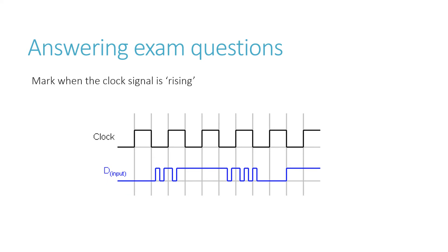The first thing you have to do is mark the points when the clock signal is rising. Those are the only points in the diagram that you are interested in. There may be fewer than this when you do the question in the exam. But that's the only places that you're interested in, where the signal is rising.